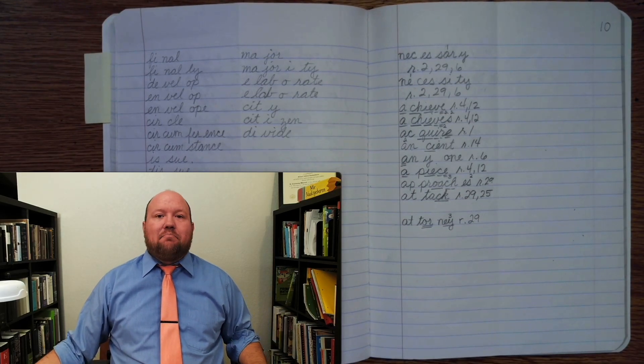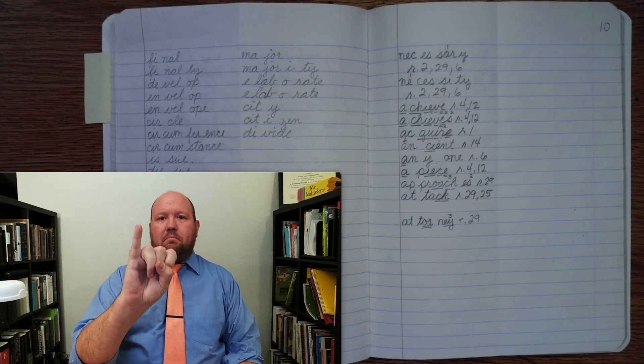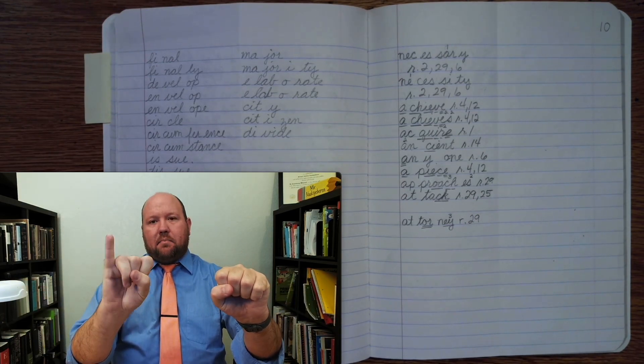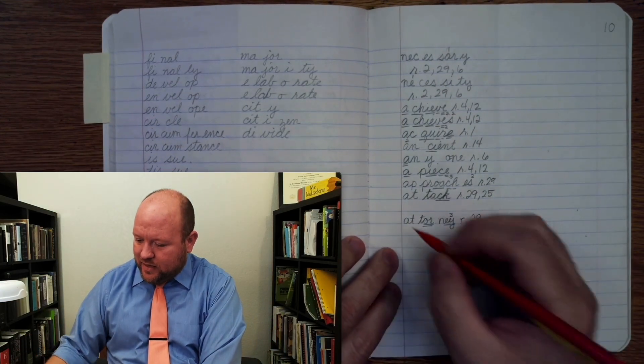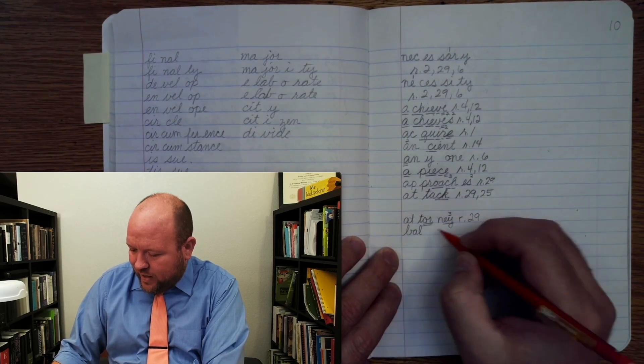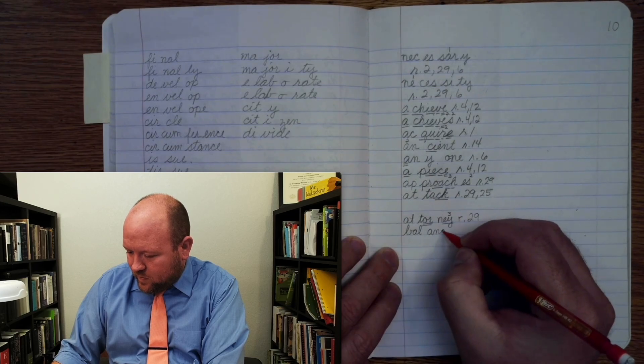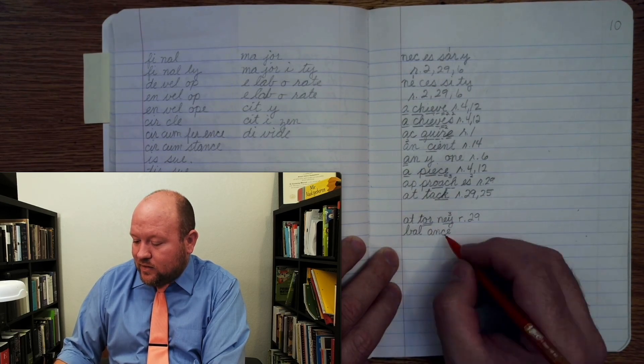The next word is balance. Like, keep balance. Balance. Bal. Ants. B-A-L-A-N-T-S-E. Balance. Bal. Ants. B-A-L-A-N-T-S.